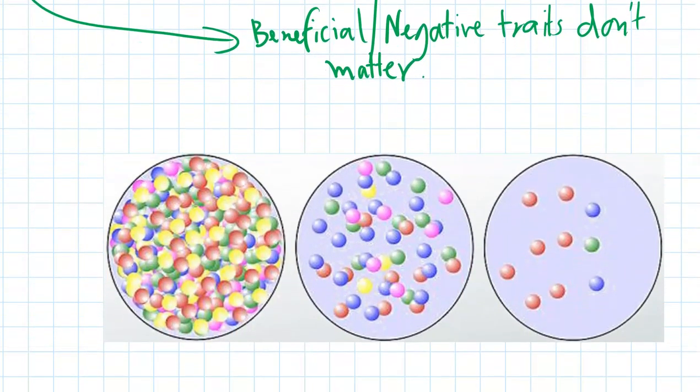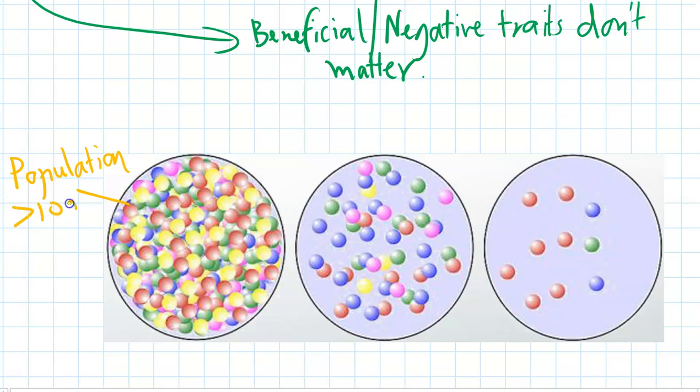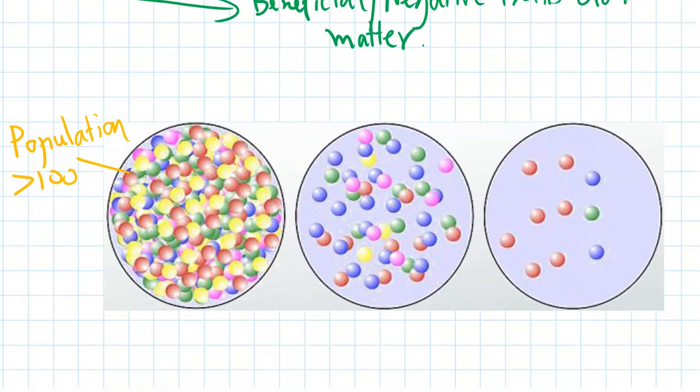Let's look at another example. Here we've got an imaginary population, and let's say this is fur color of these individuals. In the first one, we've got a really large population, over 100 individuals. The second one has around 50, so n equals 50, n being the number in the population. And then we've got a really small population over here with only 10 individuals.